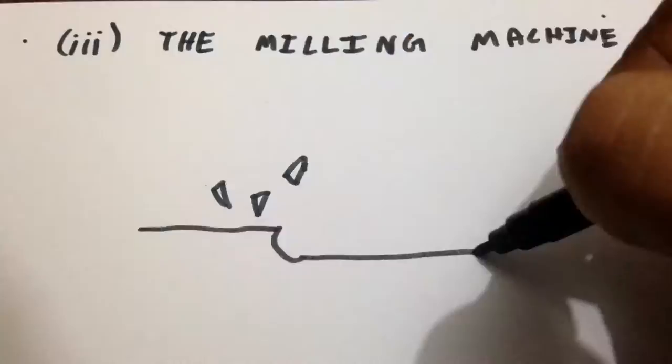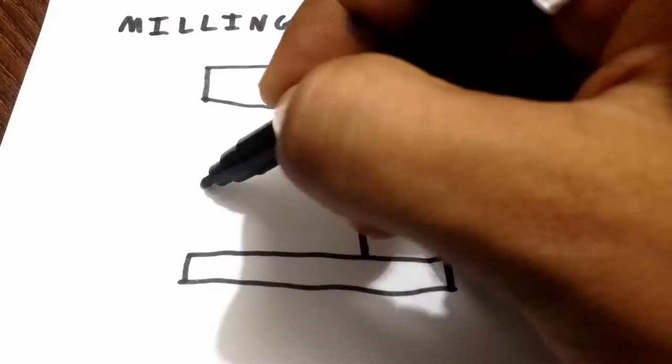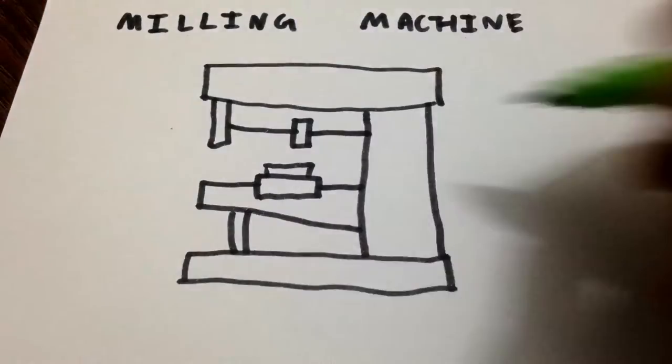Third, Milling Machine. Milling is a process in which the metal removal takes place due to cutting action of a revolving cutter. The machine tool on which the milling operation is performed is called a Milling Machine.